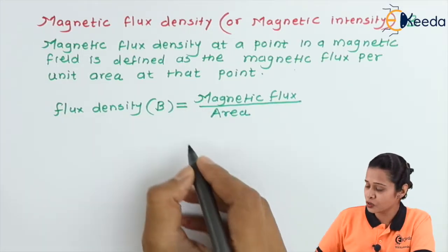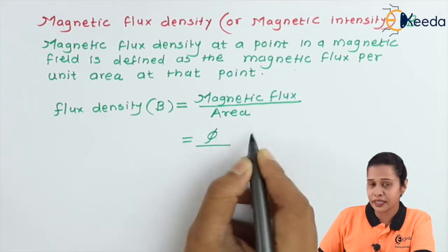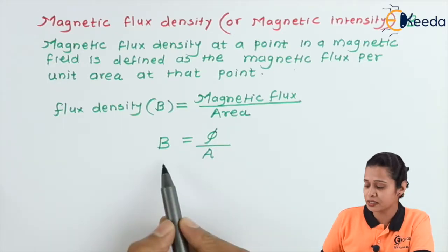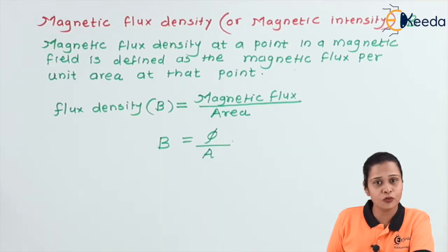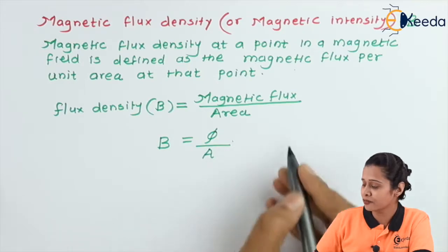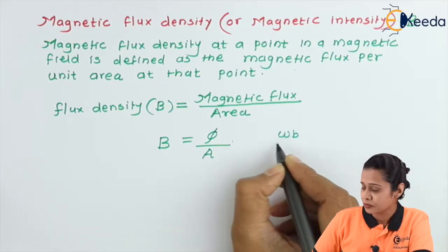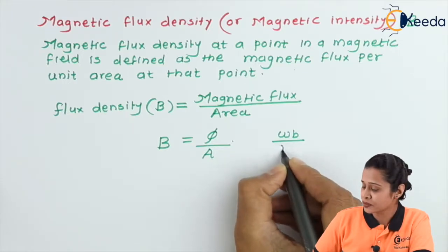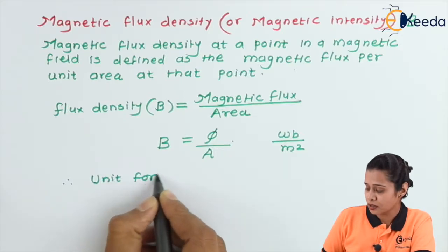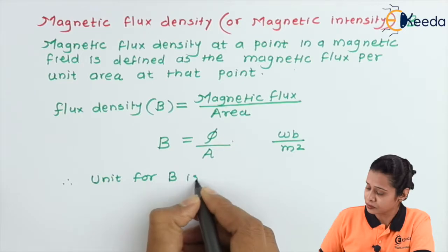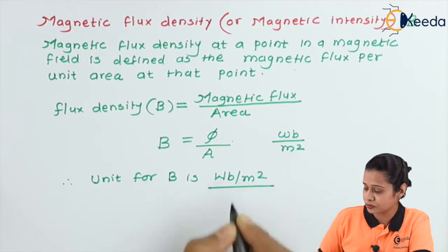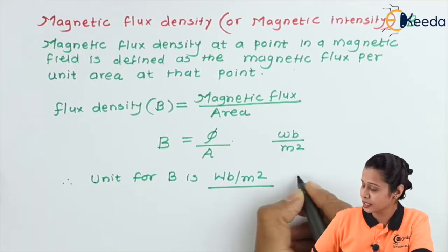We know magnetic flux denoted by phi and area is A. Hence, we can write magnetic flux density B is equal to phi by A. The unit of phi, that is magnetic flux, is Weber and unit for area is meter square. Hence, unit for B is Weber per meter square or the SI unit for this is Tesla.